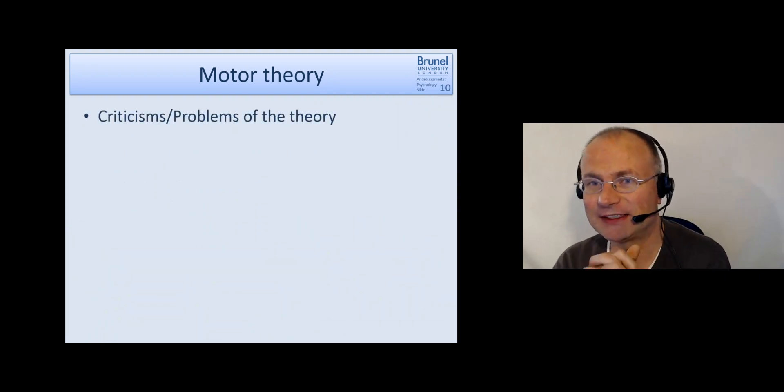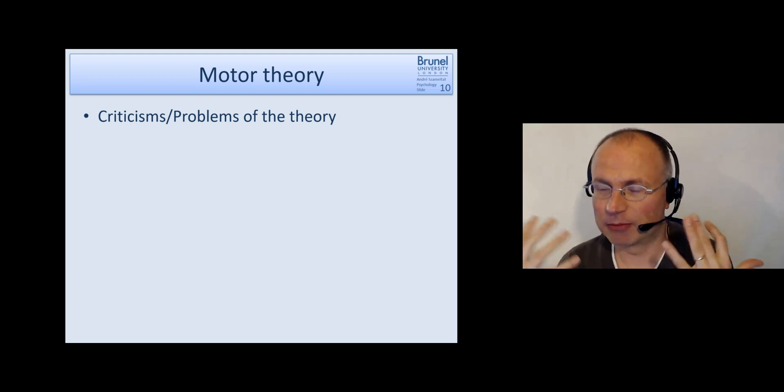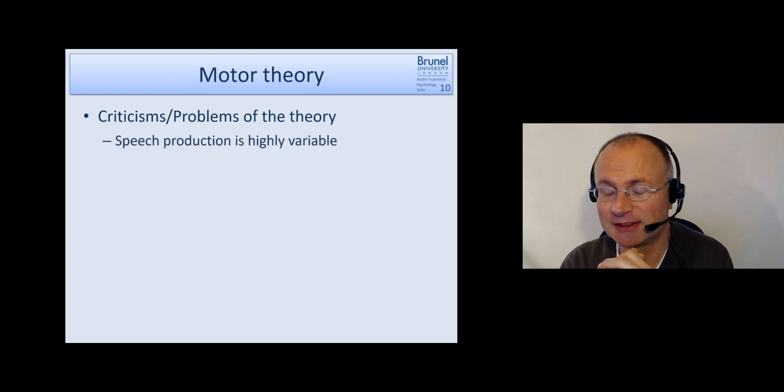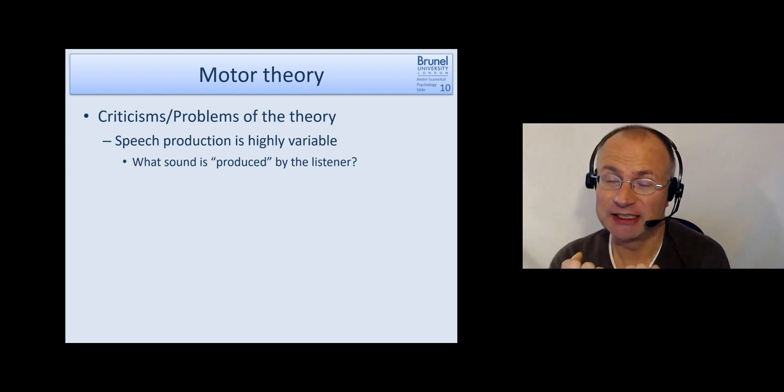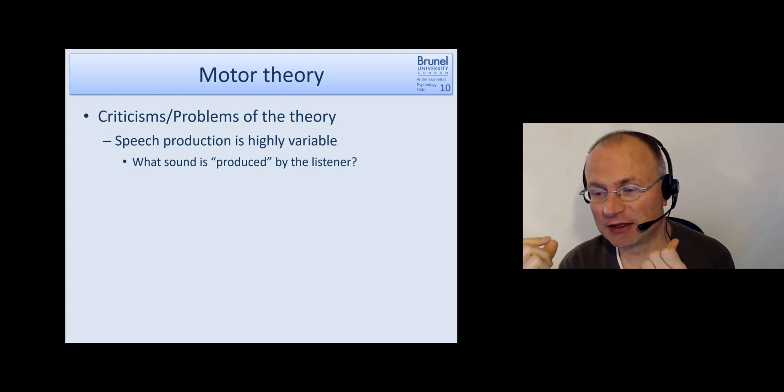However, as always, there is criticism of the theory or there are problems with observations which are hard to explain and interpret. One thing is that, as we've discussed last week, speech production is highly variable. We've said that there are at least 50 different ways to say the word the in the English language. We have accents and things like that. We may have new words which we've never heard. So what sound is actually produced by us? When you hear something, how can we make sure that the correct phoneme is produced? The same phoneme as produced by the sender, by the speaker. Because of these transmission errors of accents and everything, we may actually produce something different in our brain.